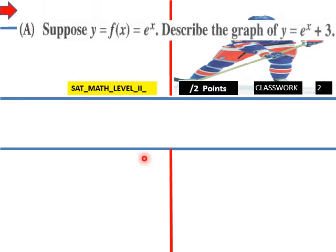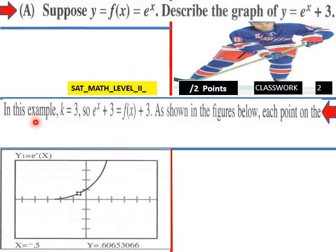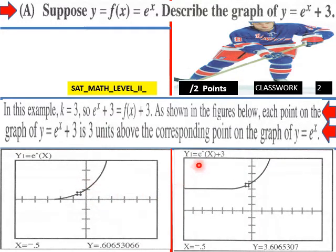For an example, suppose y = f(x) = e^x. Describe the graph of y = e^(x+3). Here k = 3, so e^(x+3) = f(x+3). As shown in the figures, here's y = e^x and here is y = e^(x+3). We go up three units on that graph. The graph of y = e^(x+3) is three units above the corresponding graph of y = e^x.